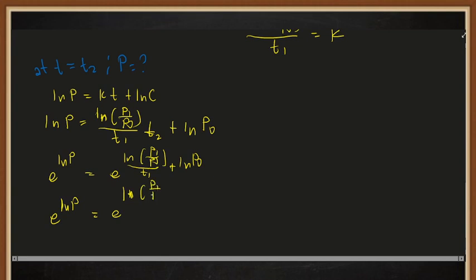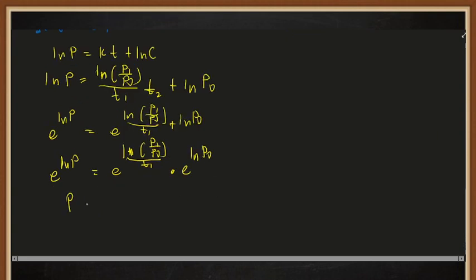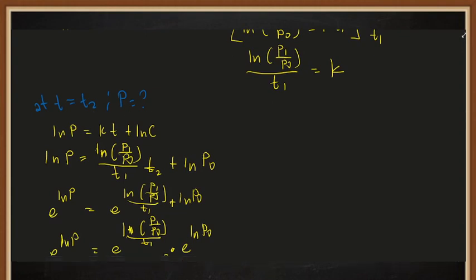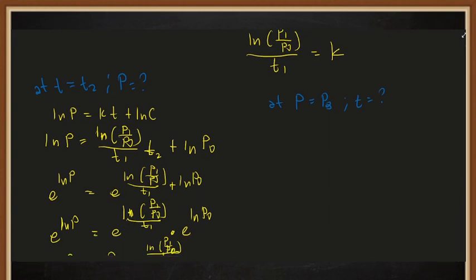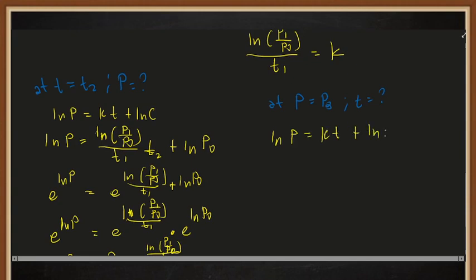Using the properties of logarithms and simplifying, we get: p = p₀ · e^[ln(p₁/p₀)]. So this is how we solve for the value of p given t₂. Similarly, if we want to solve for t given a population p₃, we use the same general equation: ln(p₃) = kt + ln(c).